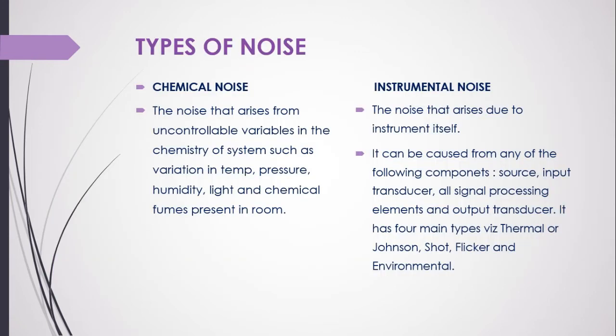Now let's discuss the types of noise. There are two basic types: chemical and instrumental. Chemical noise is the noise that arises from uncontrollable variables in the chemistry of the system, such as variations in temperature, pressure, humidity, light, and chemical fumes present in the room.